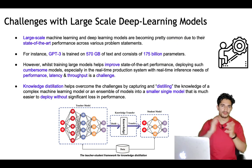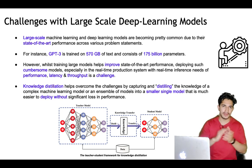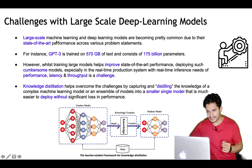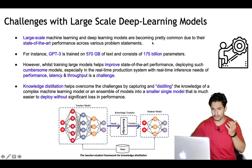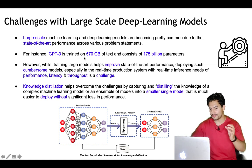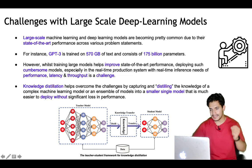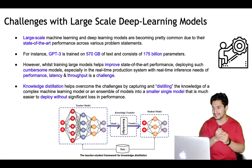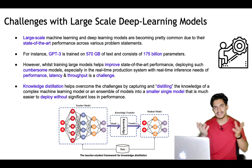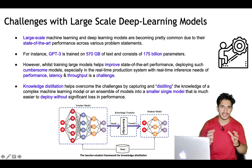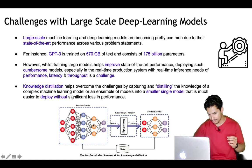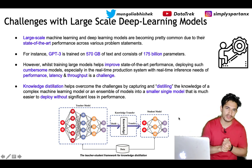As deep learning models are gaining more and more popularity, there are challenges with large-scale deployment. Large-scale machine learning and deep learning models are becoming pretty common due to their state-of-the-art performance across various problem statements. For instance, GPT-3 is trained on 570 GB of text consisting of 175 billion parameters, and these models are getting bigger every day. However, deploying such cumbersome models in real-time production systems with real-time inference needs of performance, latency, and throughput is a challenge.